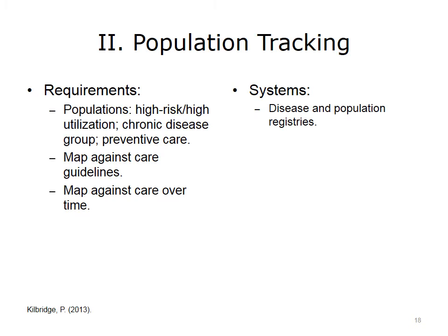We map care against care guidelines — mapping populations against guidelines and care over time. For example, how many times in the past five years has a diabetic patient received hemoglobin A1c? What is the trajectory of those scores — are they increasing or decreasing? The systems most used to track populations over time are disease and population registries. Many EMRs provide that capability, and many population health software packages also include disease and population registries.